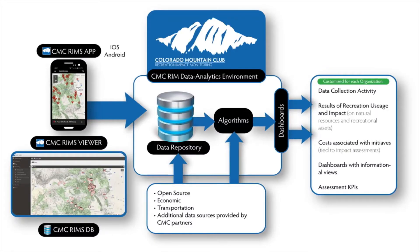The mobile app is just the front end of the larger RIMS program. Data is saved in a cloud-hosted repository and run through algorithms which create dashboards that help land managers interpret and effectively utilize the data. We provide land managers with custom dashboards using geographic filtering to build a data story. CMC is working with a variety of land managers, partners, partner organizations, and other volunteer groups to process and utilize the data for rapid response stewardship projects and long-term recreation planning.